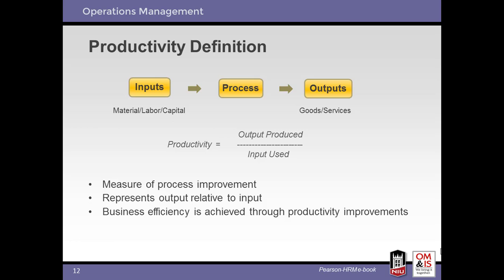Productivity is a measure of process performance. As you improve a process, productivity should increase. Productivity is defined as the ratio of the effort required to create a certain output. This may be measured as labor hours per unit produced or cost per unit produced.